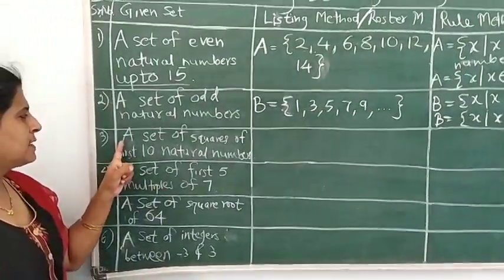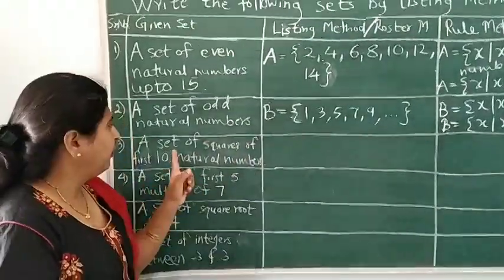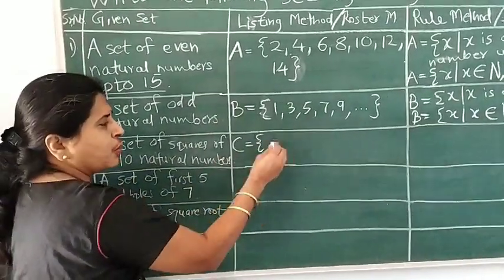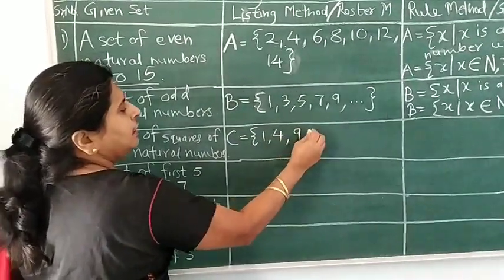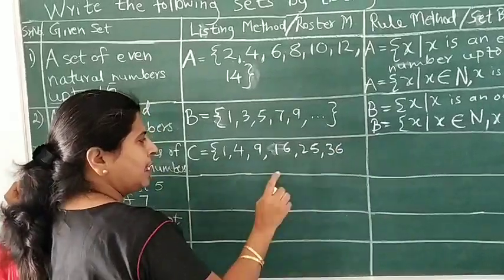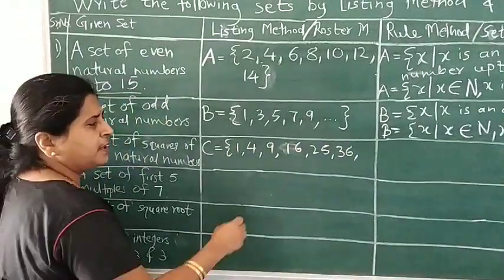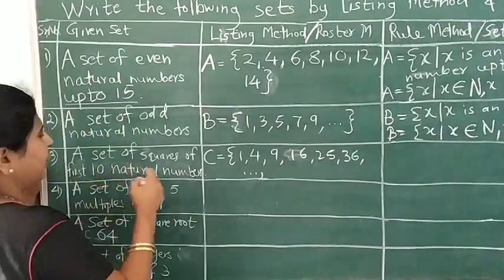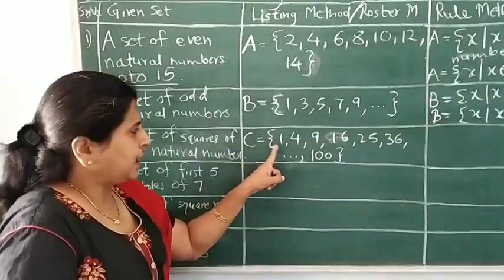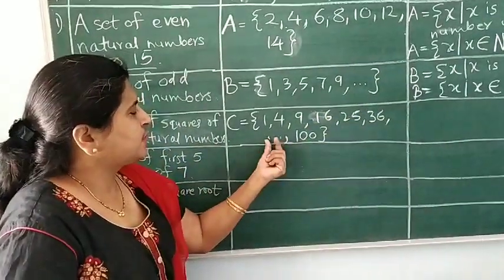Now let's go to the third set: a set of squares of the first 10 natural numbers. The first 10 natural numbers are 1, 2, 3, 4, 5, 6, 7, 8, 9, 10. We want squares of those. Let's name the set C. 1 squared is 1, 2 squared is 4, 3 squared is 9, 4 squared is 16, 5 squared is 25, 6 squared is 36. Now once we understand the relationship, you can put dot-dot-dot and write the last element 100 and close the bracket. Or you can write 7 squared, 8 squared, 9 squared, and 10 squared — either way is correct.